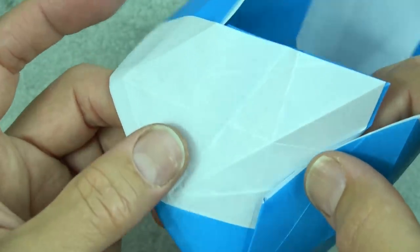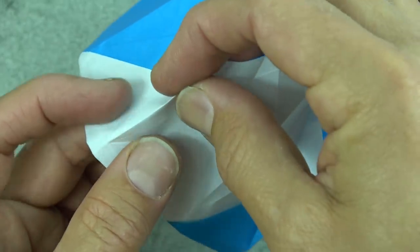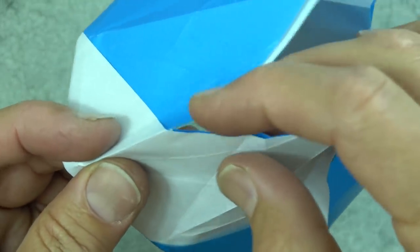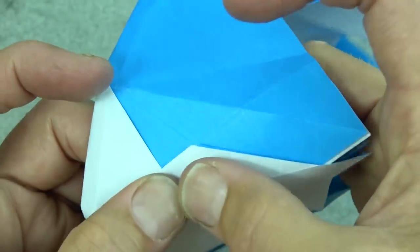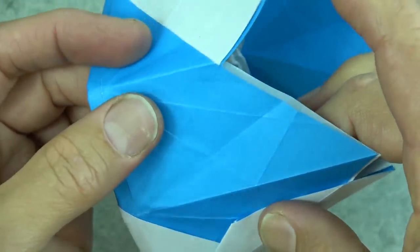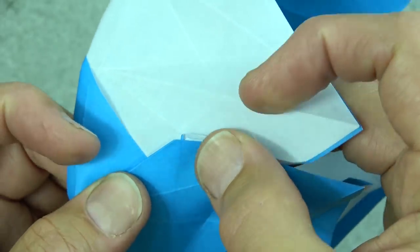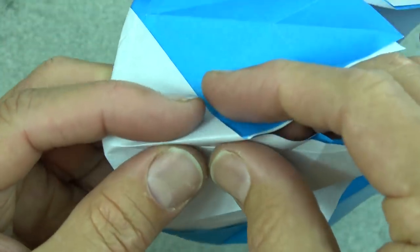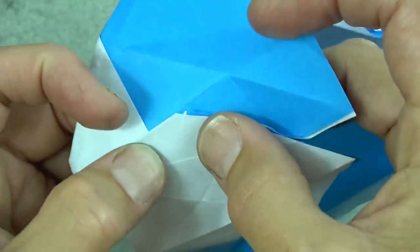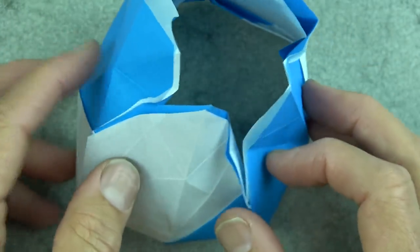And let's do that on the other three such places. So here, pinch it, make sure that you have all four edges and fold it over. And two more. Here, all four layers, so like that. And one more. Okay, so we have it like that.